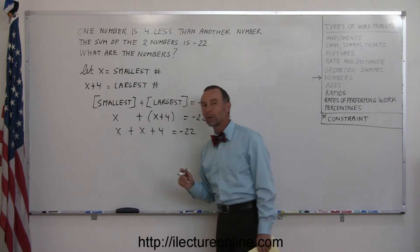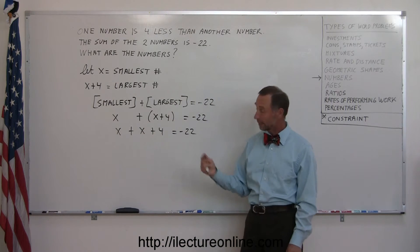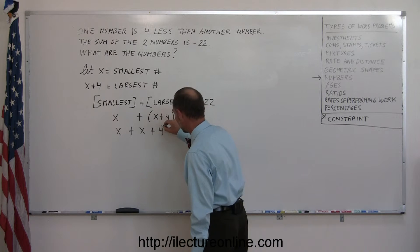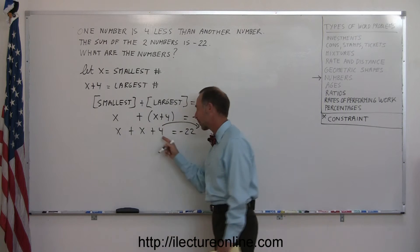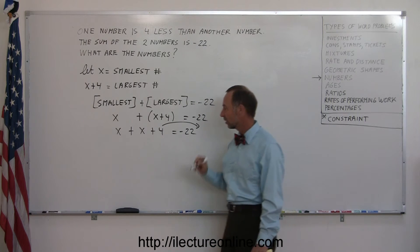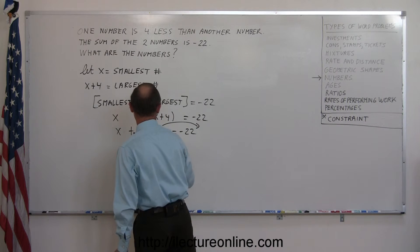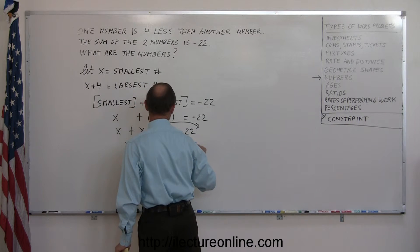Now I want to move all the numbers to the right side, all the x to the left side. They're already there. Move the four across. Remember, when we cross the equal sign, the sign changes. So this becomes x plus x equals minus 22 minus four.